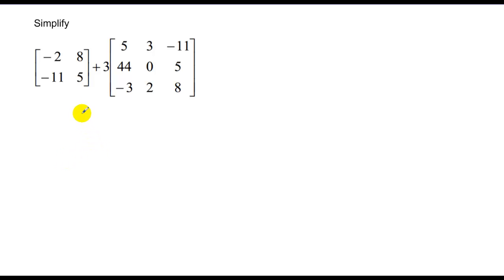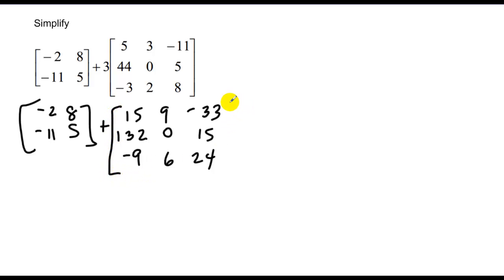Now, in this case, let's distribute this first. Negative 2, negative 11, 8, and 5. And this goes to 15, 132, negative 9, 9, 0, 6, negative 33, 15, and 24. Now, in this case, they're asking me to add these two, so I have a 2 by 2 and a 3 by 3. Since they don't have equal dimension, there's no solution.